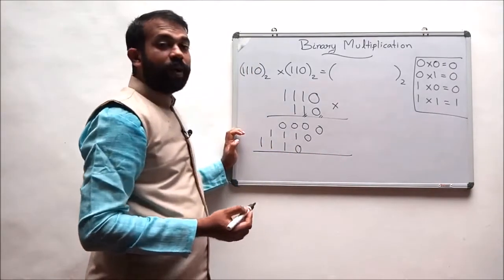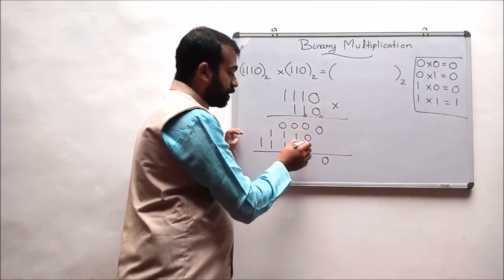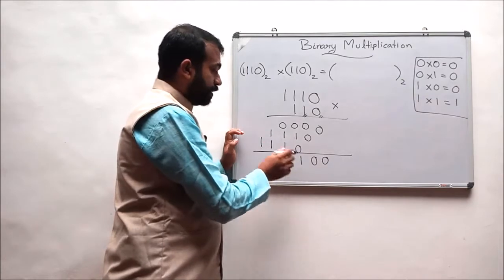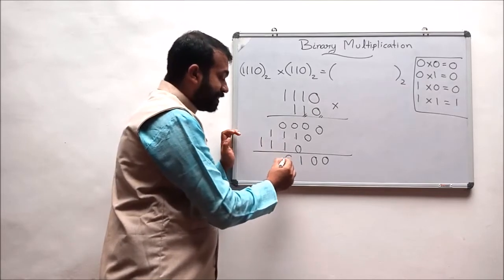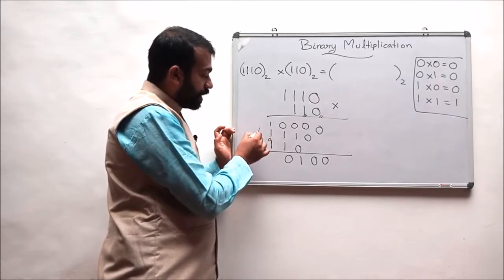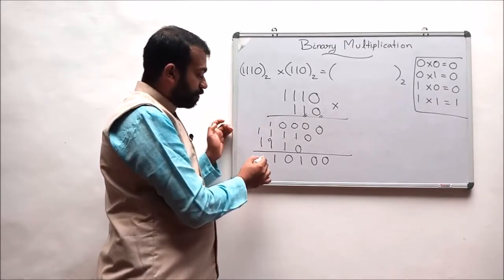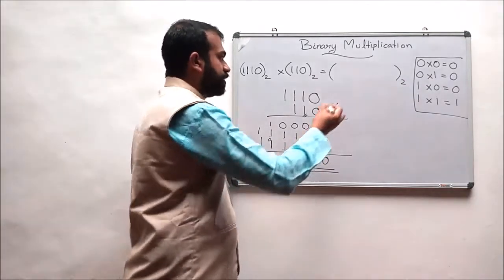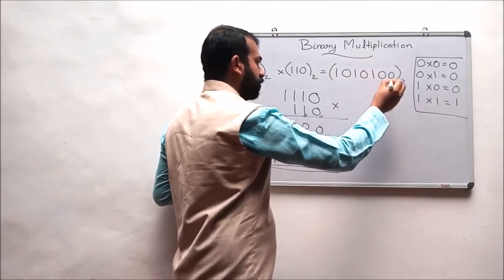In the second set of operations, we perform the binary addition step. 0 plus 0 is 0; 0 plus 0 is 0; 0 plus 1 is 1; 1 plus 0 is 1; 0 plus 1 is 1; 1 plus 1 is 0 with a carry of 1; 1 plus 1 is 0 with a carry of 1; 0 plus 1 is 1; and finally 1 plus 1 results in 0 with a carry of 1. So the final answer is 1010100 to the base 2.